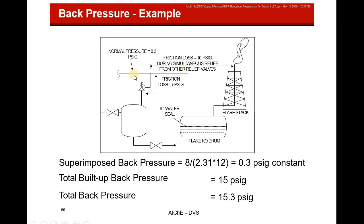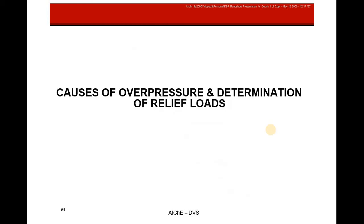Example of back pressure: there's a buildup of pressure that opens the relief, which goes to a knockout drum before the flare. The superimposed back pressure is 0.3 PSIG and the total built-up back pressure is 15 PSIG, giving a total back pressure of 15.3 PSIG gauge. This level of back pressure could cause chattering.